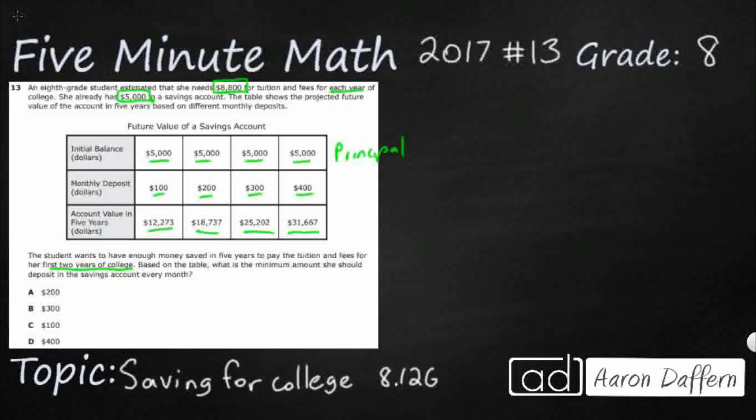They're asking us to look for the first two years of college. Well, one year of college is $8,800. So if year one is going to be $8,800, year two is going to be $8,800. We're going to bring that together, and let's see how much we need for the first two years. We're simply going to add it. Nothing fancy happening here. That's going to be $17,600. So I need $17,600 if that $8,800 is true.